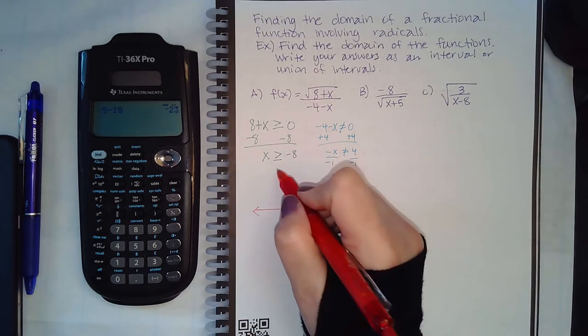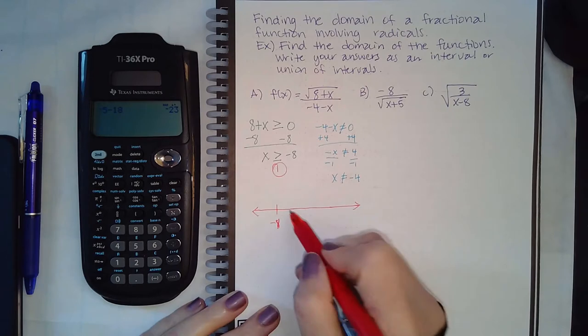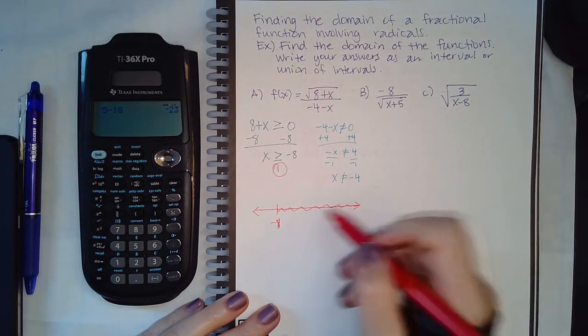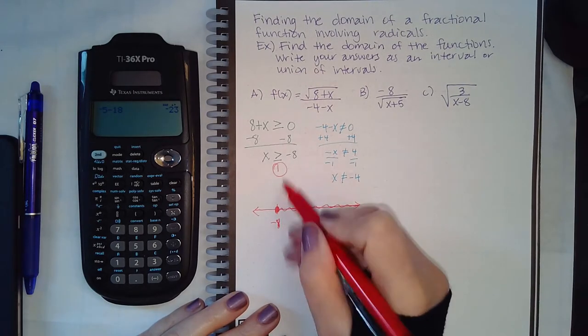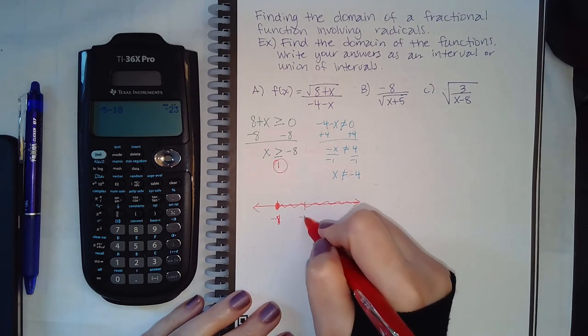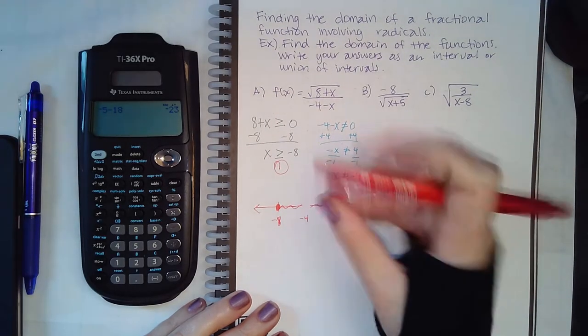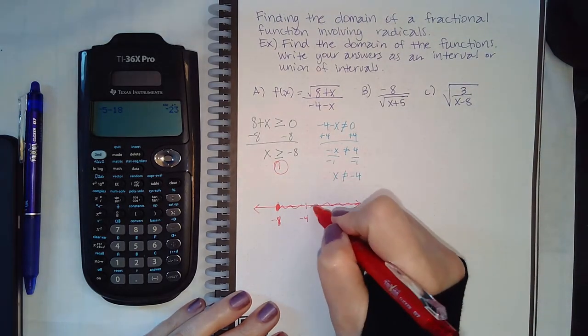Now what I have to do is I have to draw the inequality first. So draw the inequality first. Here's negative eight and I'm going to shade everything greater than negative eight, and this is going to have a solid dot because there's a bar involved. Negative four is over here and now I'm saying everything but negative four. What that means is that there's actually going to end up being a hole at negative four.